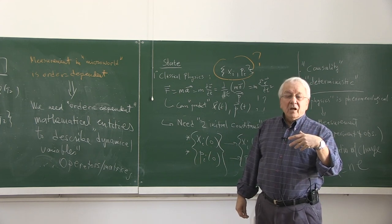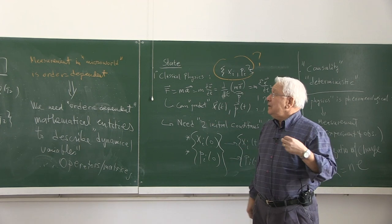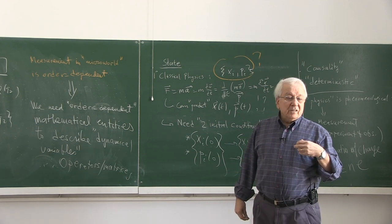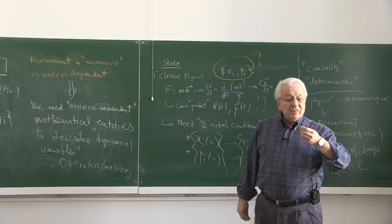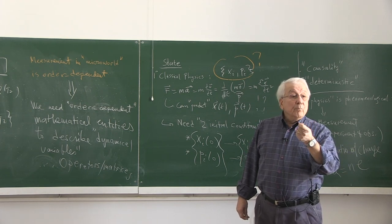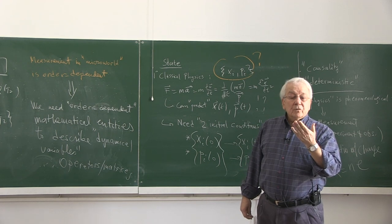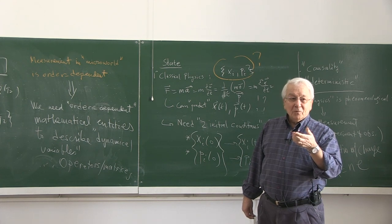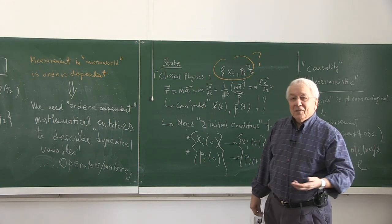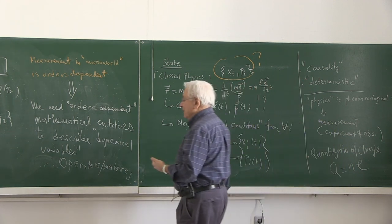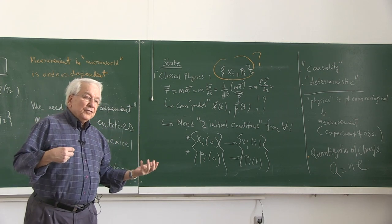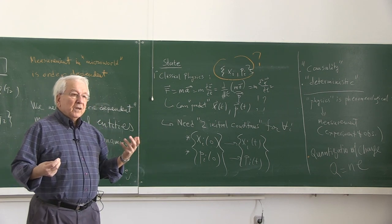You then deduce whatever you are supposed to deduce — that you cannot measure two different components of certain quantities simultaneously. The p and q pair is the usual pair — momentum and position — and that's also the pair used in the Einstein-Podolsky-Rosen paper to illustrate the incompleteness of quantum theory. But David Bohm, a student of Oppenheimer at Berkeley, used not position and momentum but spin one-half.